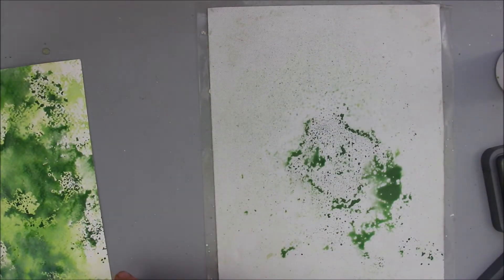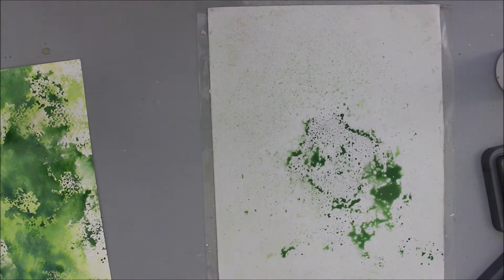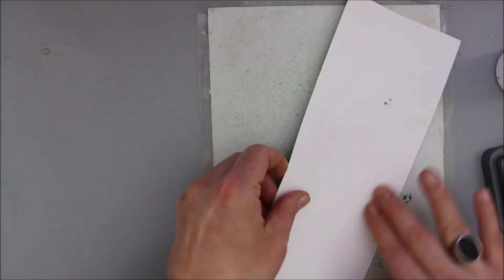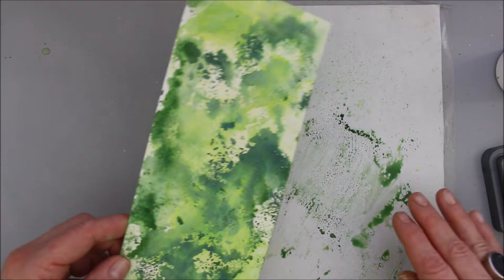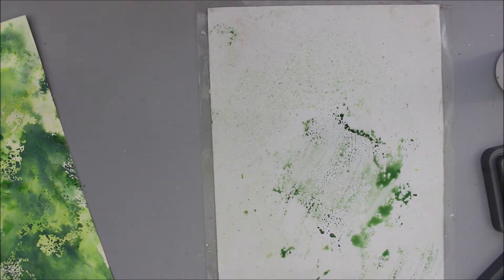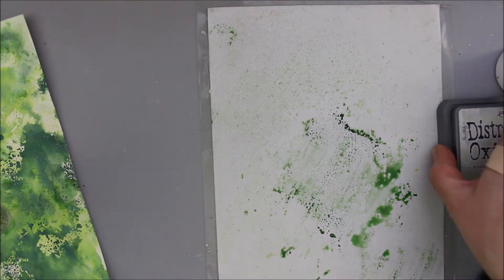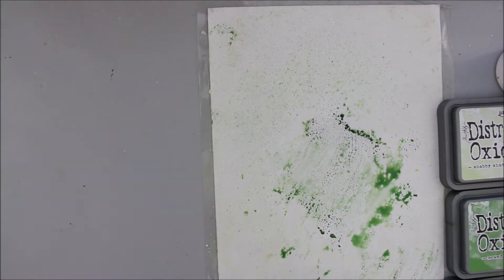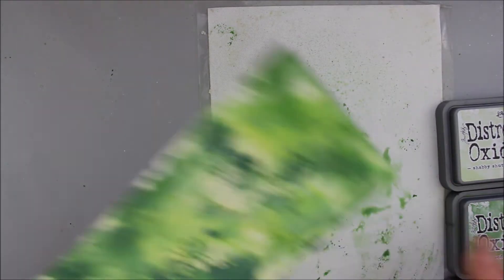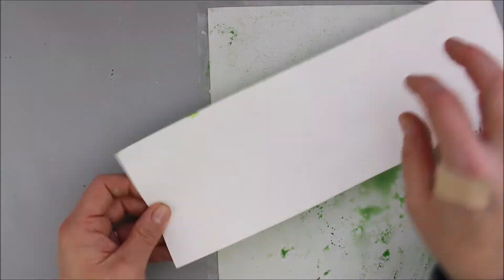And as Tim always says, if you're adding just enough water to the Distress Oxides until the color is starting to get pearly, you can dip the paper really lightly into the color, and you get these amazing pearly effects, which I absolutely love.